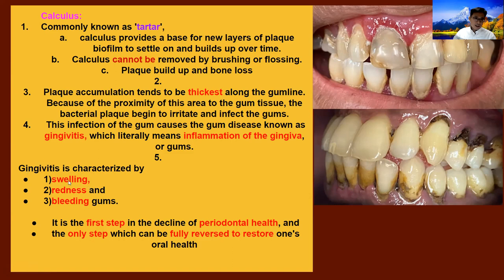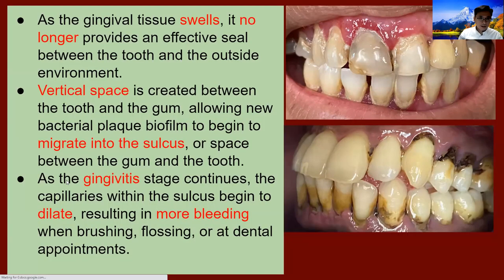Gingivitis is characterized by swollen, reddish, bleeding gum. It is the first step in declining gum health, and also the only stage at which it is fully reversible to restore oral health. When the gingival tissue swells, it's no longer providing an effective seal between the teeth and the outside environment — there's a gap there. A vertical space is created between the tooth and gum, allowing new bacteria and plaque biofilm to begin to migrate into the pocket within the gum and the tooth.